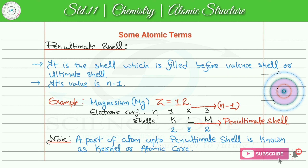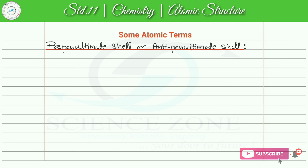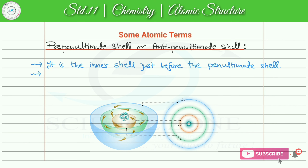Note: A part of atom up to pen ultimate shell is known as kernel या atomic core. किसी भी element के electronic configuration में valence shell को exclude करें, यानि valence shell को हटाकर बाकी जो भी inner part है up to pen ultimate shell, that part is known as atomic core या kernel. अब next term है pre-pen ultimate shell, also called anti-pen ultimate shell। यह किसी भी atom के electronic configuration का third last shell है।